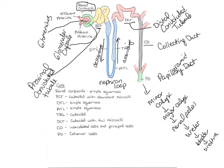The cells lining the different parts of the tubule vary by section. In the renal corpuscle there are simple squamous cells, because that's where filtration occurs. In the proximal convoluted tubule there are cuboidal cells with abundant microvilli, indicating significant reabsorption. In the nephron loop there are simple squamous cells. In the distal convoluted tubule there are cuboidal cells with microvilli, again for reabsorption. Different sections of the nephron have different functions because they are lined by different cells.